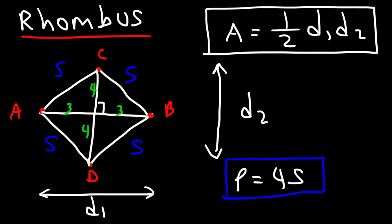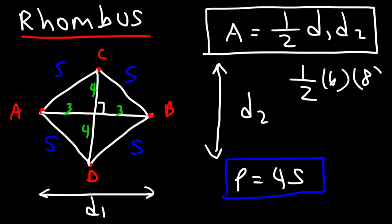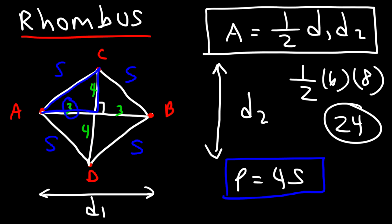For this rhombus, D1 is 3 plus 3 equals 6 and D2 is 4 plus 4 equals 8. The area is one half times 6 times 8 equals 24 square units. Alternatively, find the area of one of the four right triangles — one half times base 3 times height 4 equals 6 — and multiply by 4 to get 24 square units.